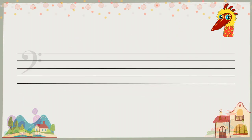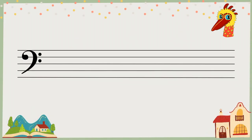Now, bass clef. You know that the line notes are G, B, D, F, A. So line one is G. In the ledger space below is F.